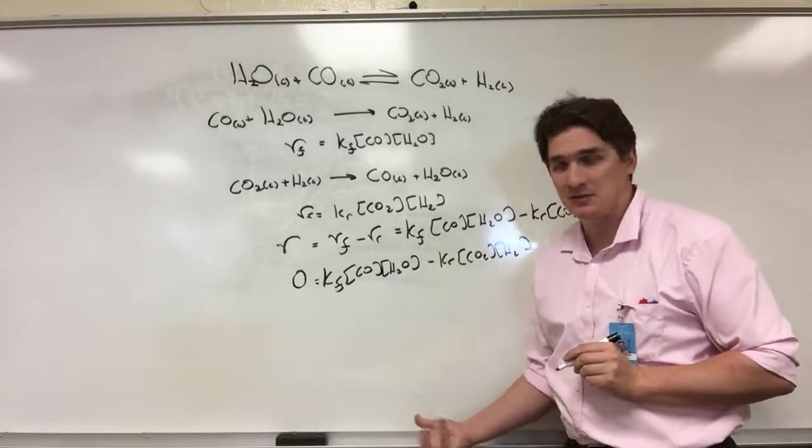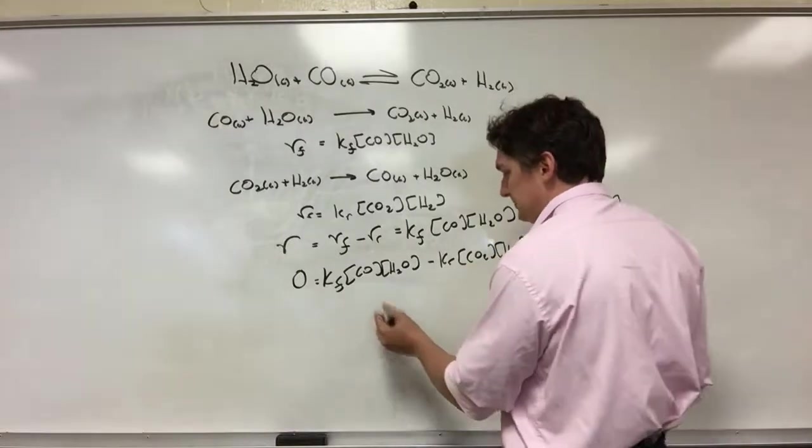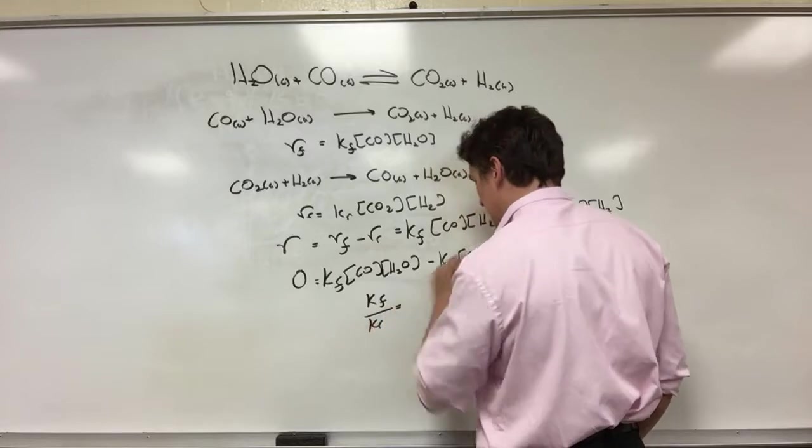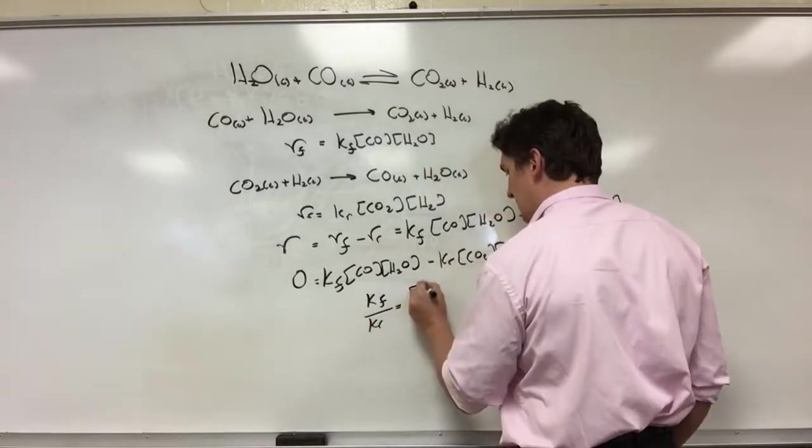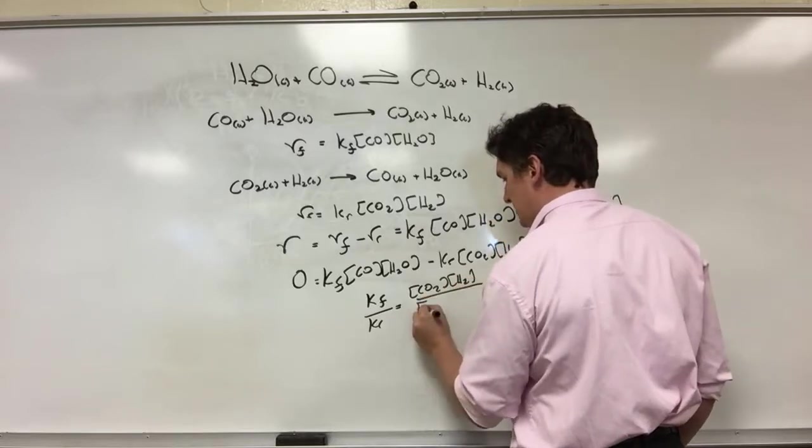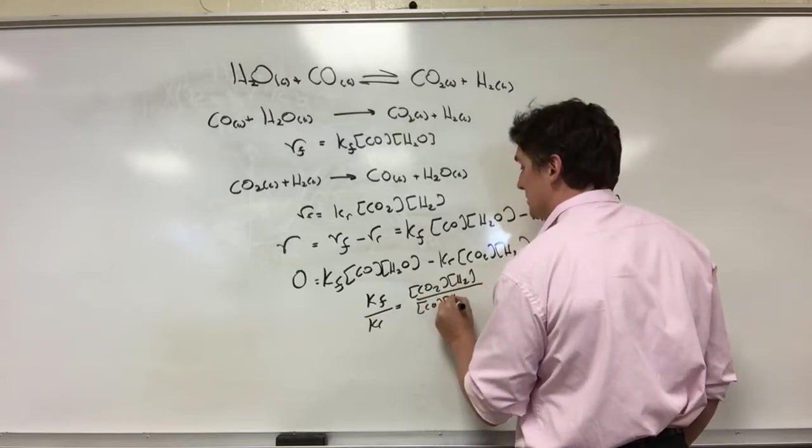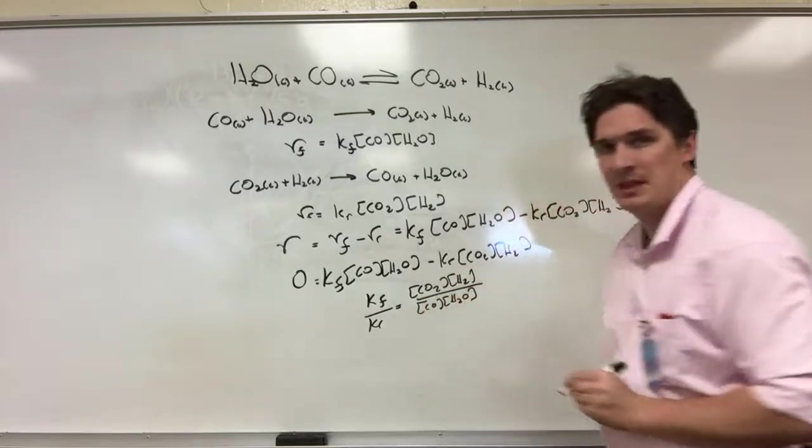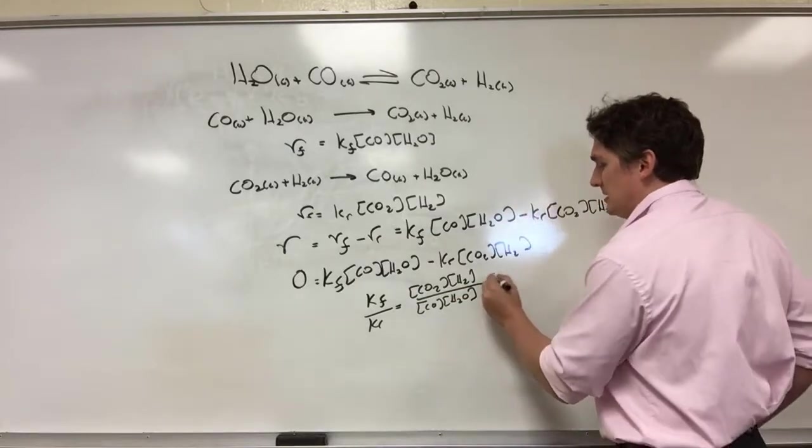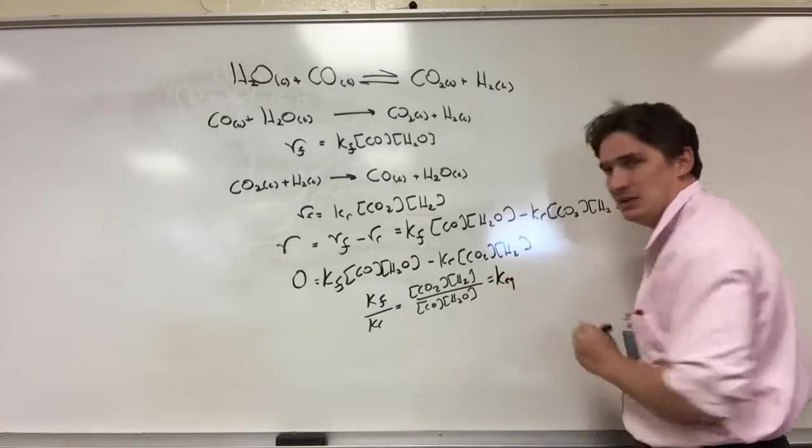I can turn around and solve this for concentrations. If I do that, I get that K forward over K reverse equals concentration of CO2, concentration of H2, all over concentration of CO, concentration of H2O. For those of you who have done equilibrium, you might recognize this expression on the right. This is the equilibrium constant, Keq.